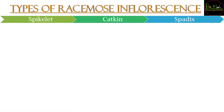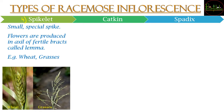The fourth type is the spikelet. Spikelets have small special spike-like flowers produced at the axil of fertile bracts also known as lemma. These small flowers are found in that area. You can see the spikelet in the case of wheat and some grasses. The photographs help you understand the description and develop photogenic memory.